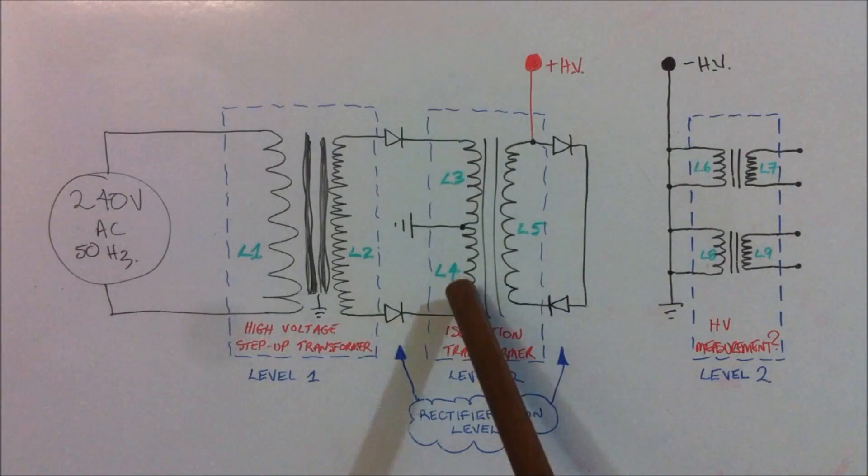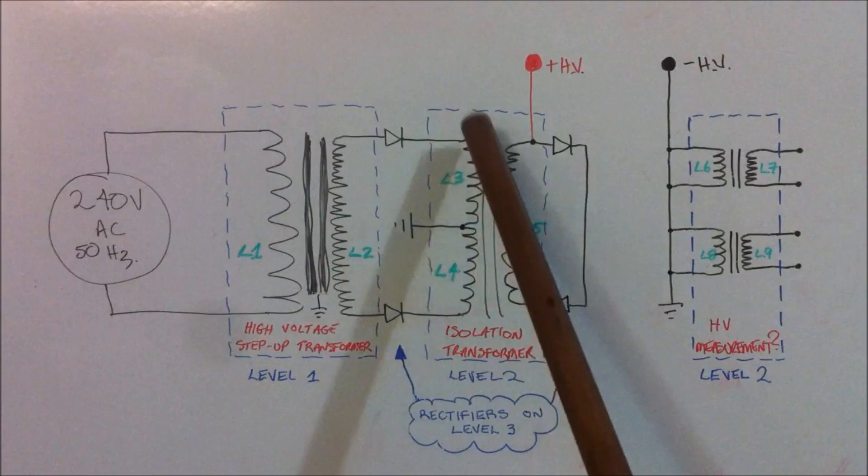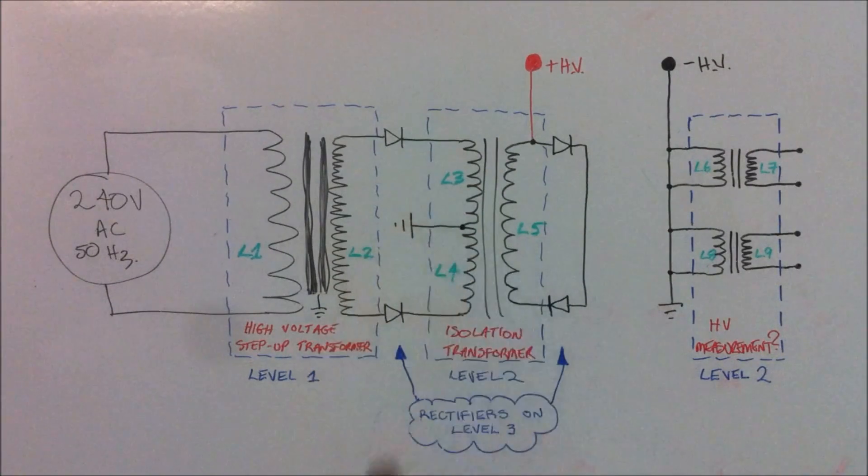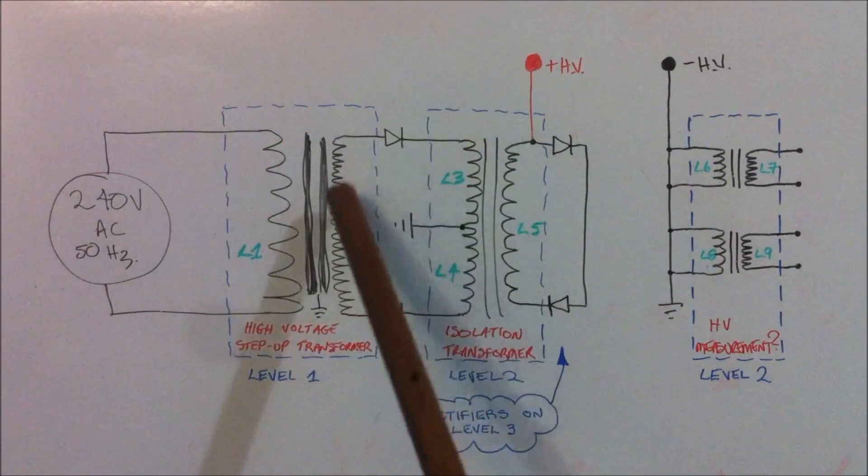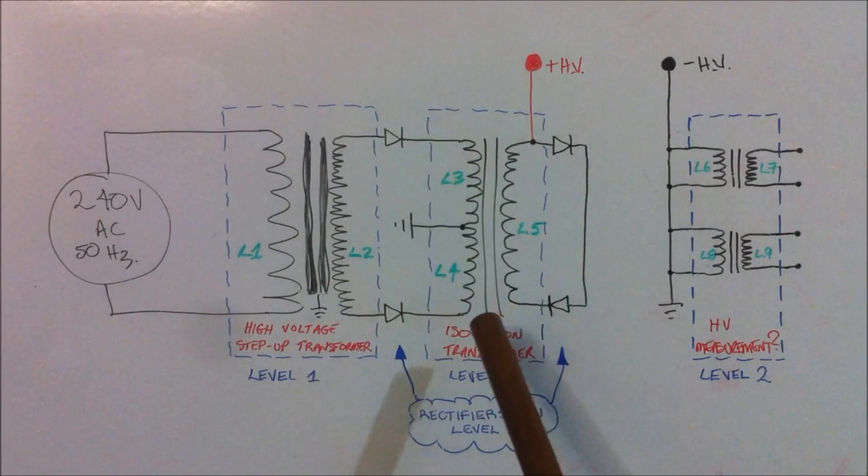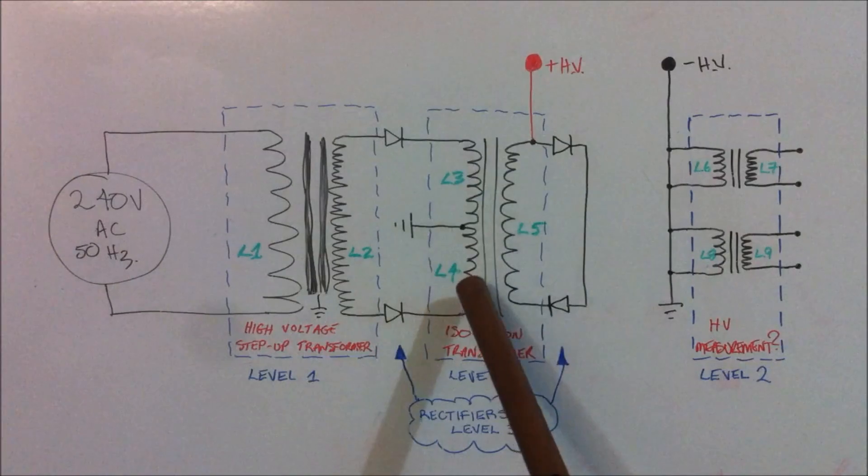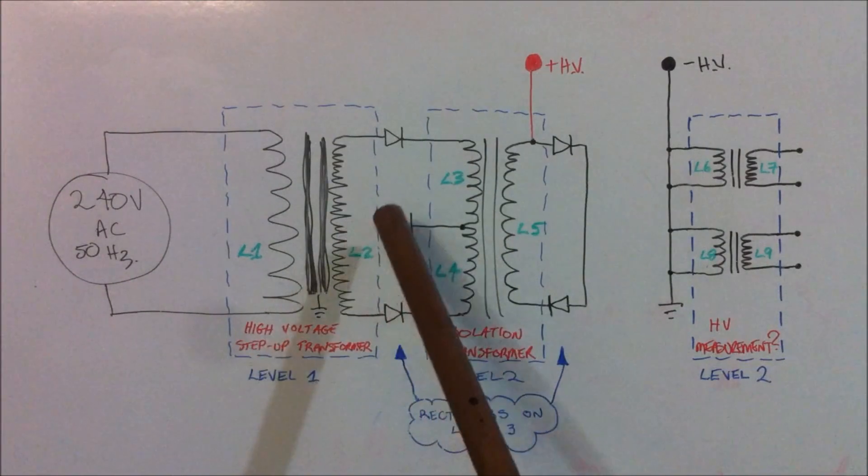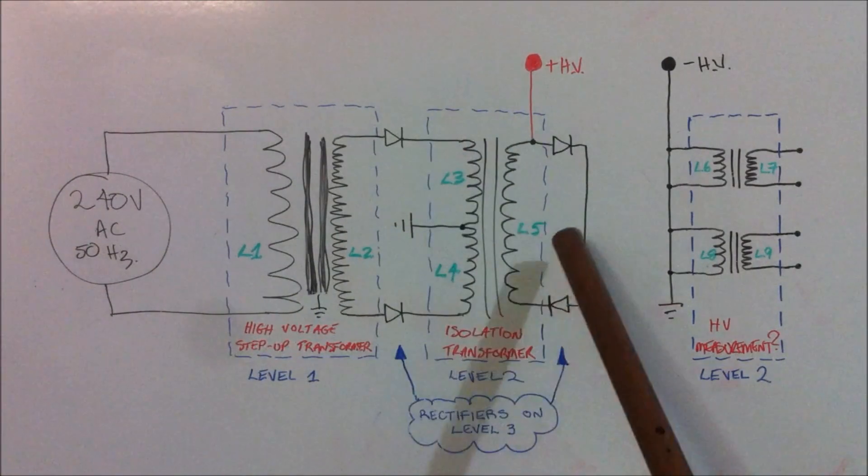into these two coils here which are the L3 and L4 coil which form one midpoint grounded secondary, I guess you could say, between this primary and secondary here. Now this L3 and L4 secondary forms the primary of the transformer on this isolation transformer here.